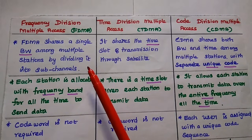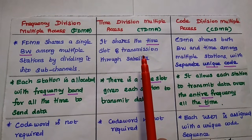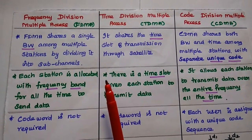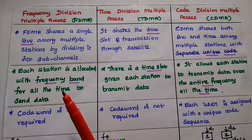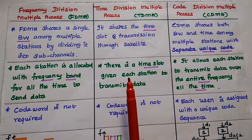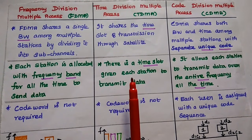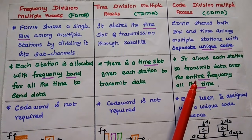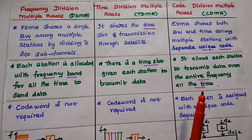In FDMA, we can separate signals by using the frequency band. In TDMA, we can separate the signal by using the time slot. In CDMA, we use a code sequence. In FDMA, each station is allotted a frequency band for all the time to send data, so the entire time is available. In TDMA, a time slot is given to each station to transmit data, so the entire frequency is available but the time is limited for each station. In CDMA, it allows each station to transmit data over the entire frequency for all the time.